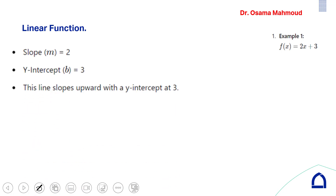For this linear function in the form Y = MX + B, M is 2 so the slope is 2, and the y-intercept is 3.